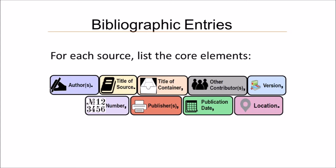For each bibliographic entry, there are nine core elements that a reader would probably need in order to find the source you used. You'll want to include as many of these core elements that apply to your source.